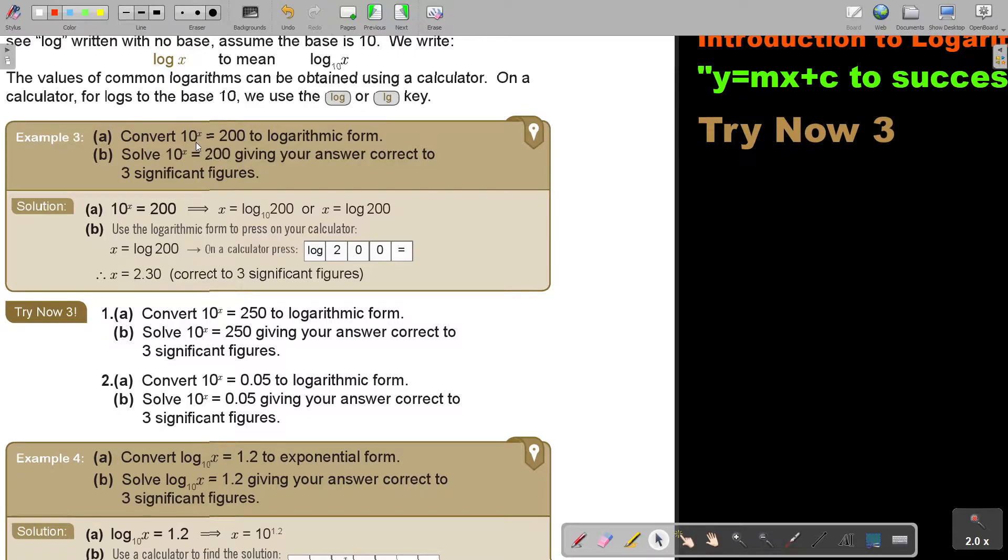Convert 10 to the power x equals 200 to logarithmic form. Remember, I keep the base and I swap these two. So I get x equals log 200 with a base of 10. Or x equals log, you don't have to write that 10.